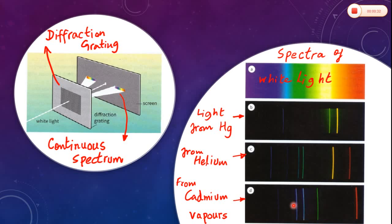These are also known as emission line spectra and show the composition of light emitted by hot gases of the elements. As an example, there are three examples here. This one is emission line spectra from mercury, this one is from helium, and this line spectra is from cadmium vapors.